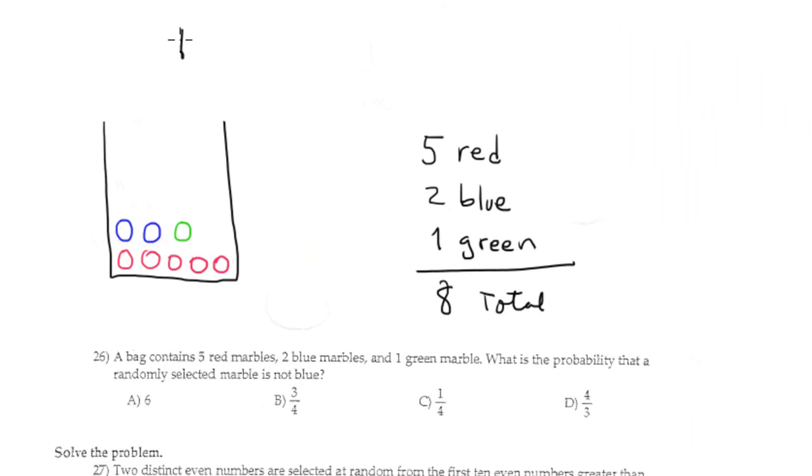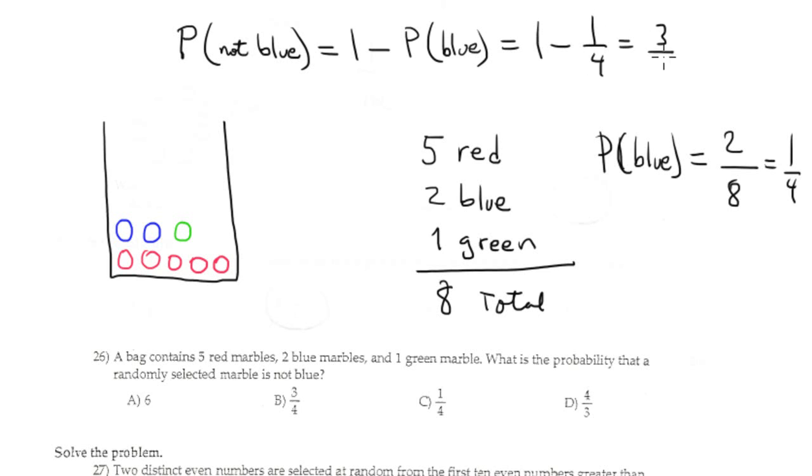Okay, we need to find the probability of no blue. No blue equals 1 minus probability blue. Probability blue is 2 over 8, which is 1 over 4. So it's 1 minus 1 over 4 equals 3 over 4, option B.